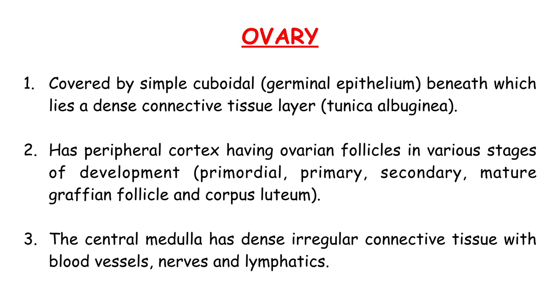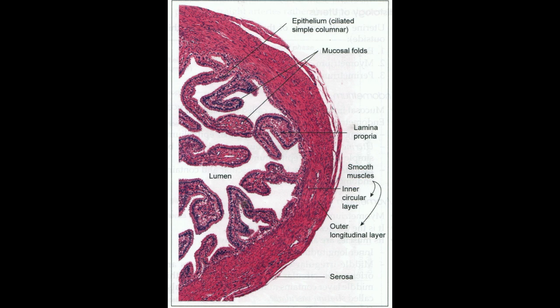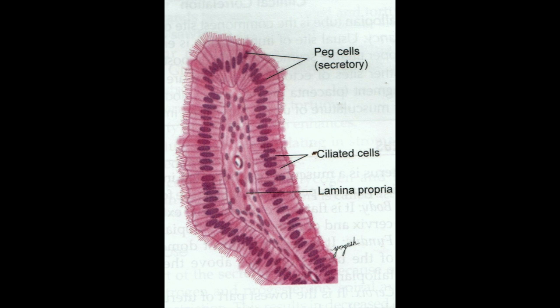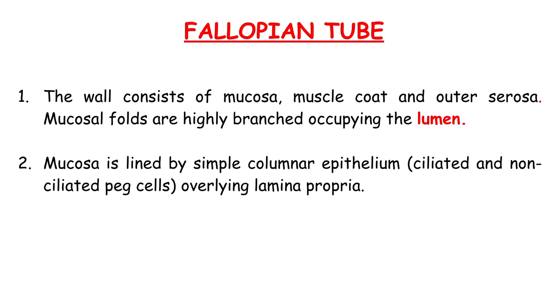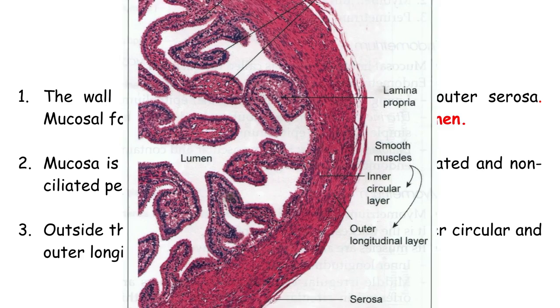Fallopian tube. The wall consists of mucosa, muscle coat, and outer serosa. The mucosal folds are highly branched, occupying the lumen. The mucosa is lined by simple columnar epithelium which contains ciliated and non-ciliated cells overlying lamina propria. Outside the lamina propria is a muscle layer with inner circular and outer longitudinal layer.